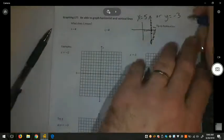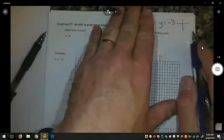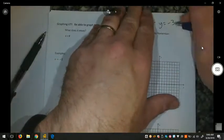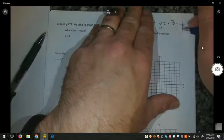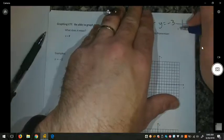Whereas, if it's y equals negative 3, that means that it doesn't matter what the x-coordinate is, the height will always be down 3 from the x-axis. So, it doesn't matter what the x is.